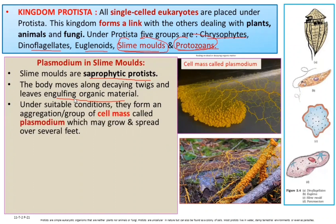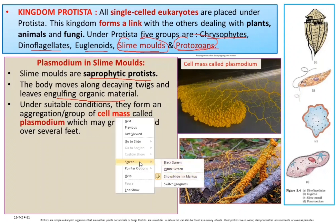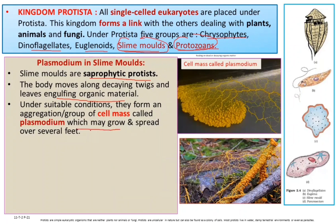Under suitable conditions, slime molds undergo aggregation, forming a group of cells. This occurs under moist and damp conditions, where they come together to form a mass which may grow and spread over several feet.